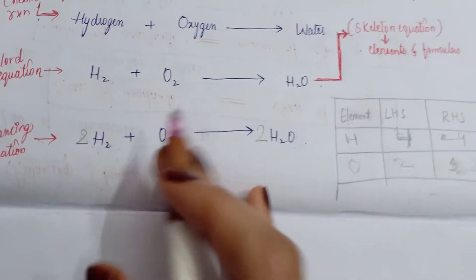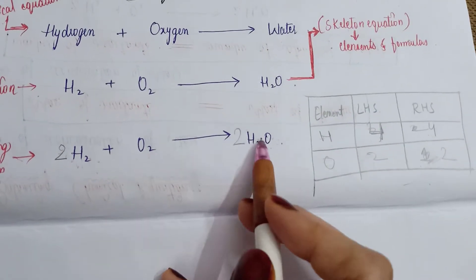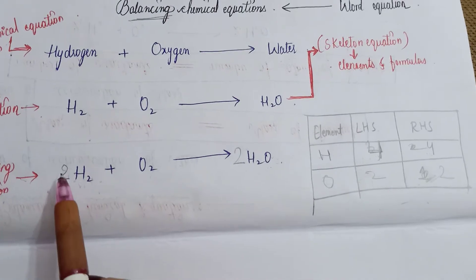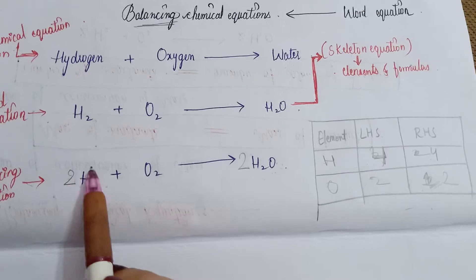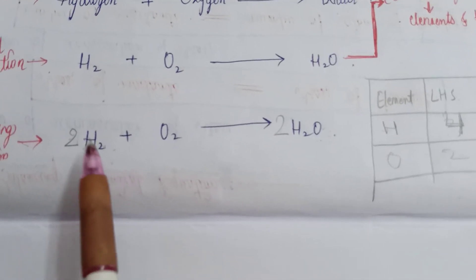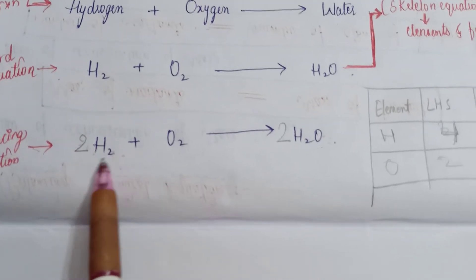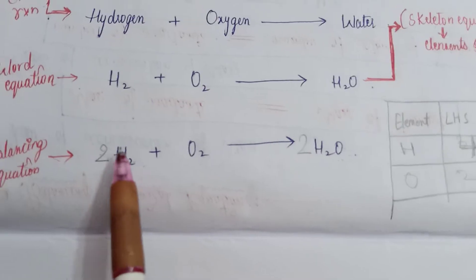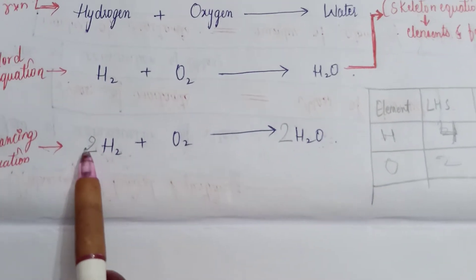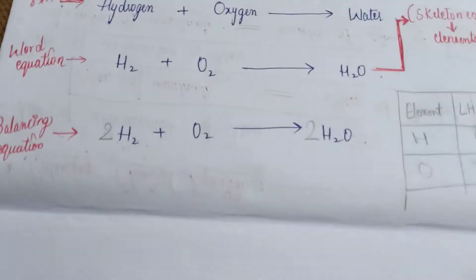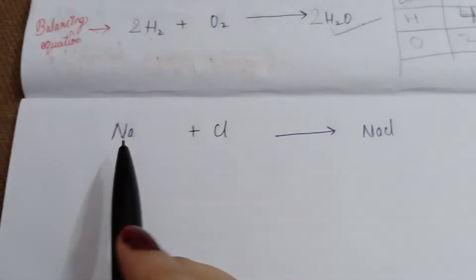An important rule: to balance an equation, you cannot change the chemical formulas of the elements. You only add or change the multipliers (coefficients) in front of the elements, ions, or atoms.